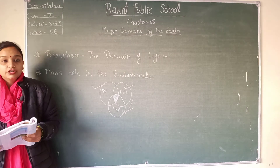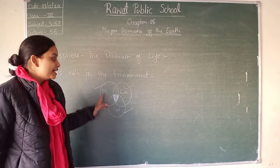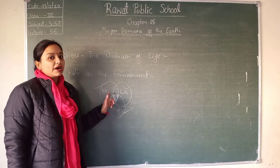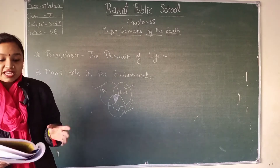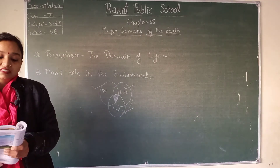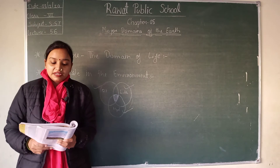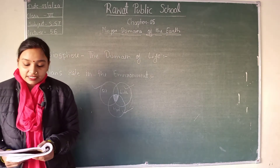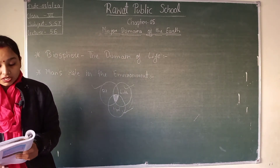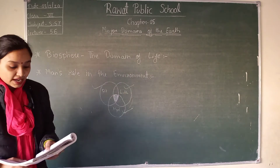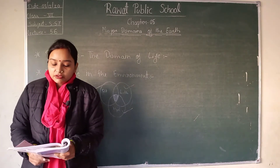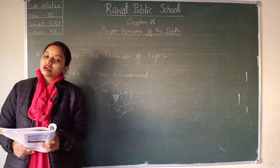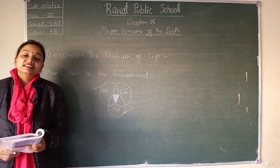A change in any one domain may lead to a change in the biosphere. The evolution of life has been a result of changes in landscape, climate, and availability of water. Even now, changes are taking place. For example, the 2004 tsunami submerged parts of the Andaman and Nicobar Islands, causing a lot of damage.